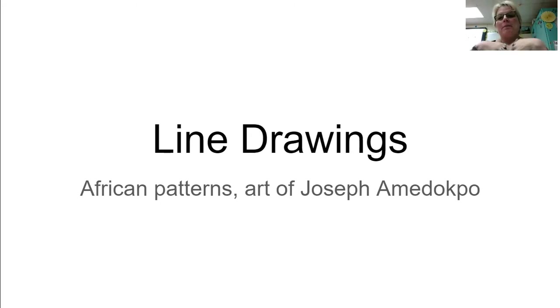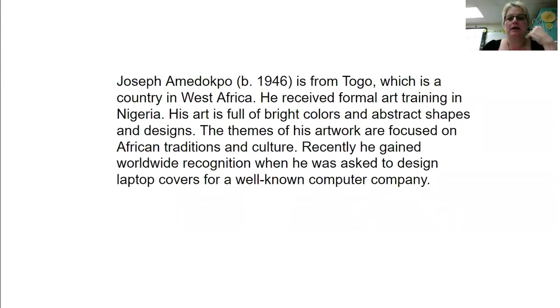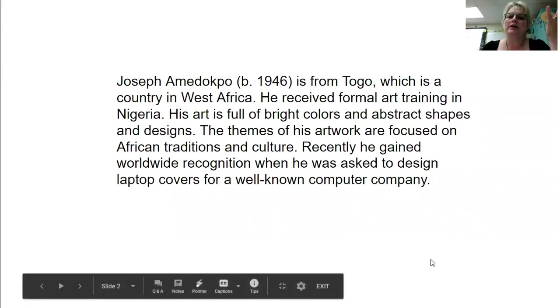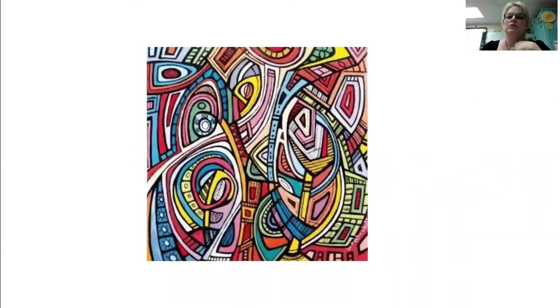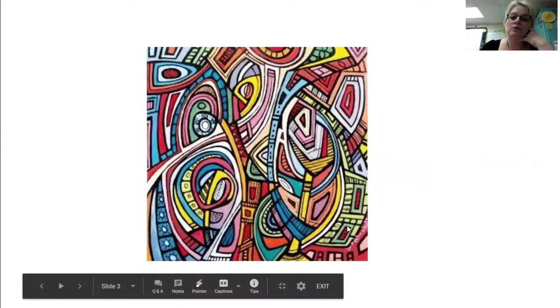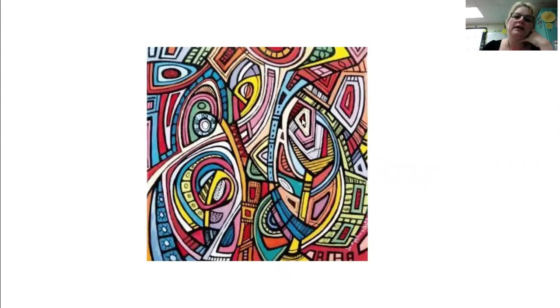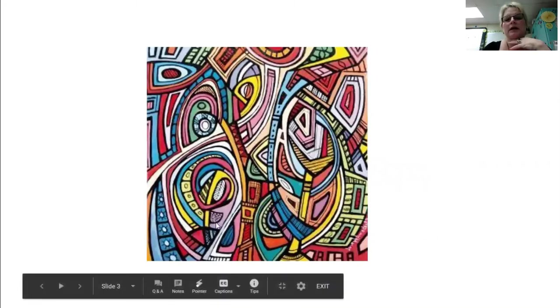And we're going to do it based upon the art of Joseph Amadokpo. Hard name to say. He is an African artist who is still alive and makes art that have abstract shapes and designs and it's full of bright colors. So this is one of his pictures. In here he's got hidden shapes, rectangles, triangles, circles, squares, and he started out with these shapes and then he built all of the other stuff around it. So we're going to make something similar to this today.